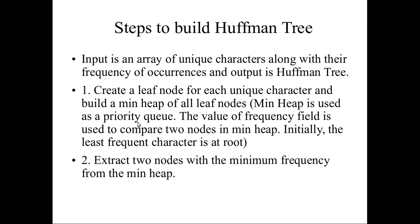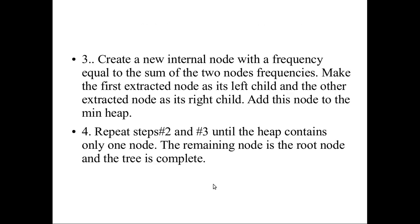First, you should create a leaf node for each unique character and build a minimum heap of all leaf nodes. The minimum heap is used as a priority queue, and the value of the frequency field is used to compare two nodes. Initially the least frequent character is at the root. You extract the two nodes with minimum frequency from the heap, then create an internal node with frequency equal to the sum of those two nodes — the smallest goes to the left child and the larger to the right child. Repeat until you have only the root node.